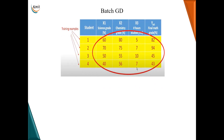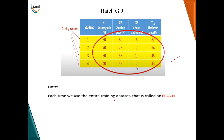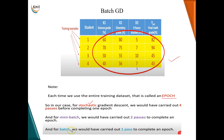If we take the entire dataset as one batch — all four training examples through forward pass, backward pass, and weight update — this is called batch gradient descent. Each time we use the entire training dataset it is called one epoch. Stochastic gradient descent with four examples takes four passes per epoch; mini-batch with batch size two takes two passes; and batch gradient descent takes one pass to complete one epoch.